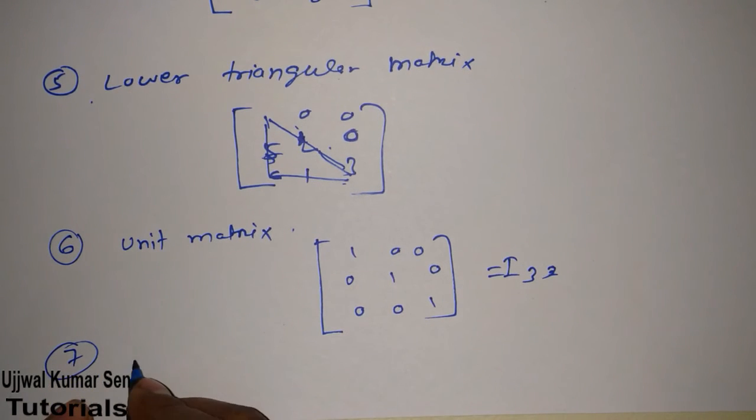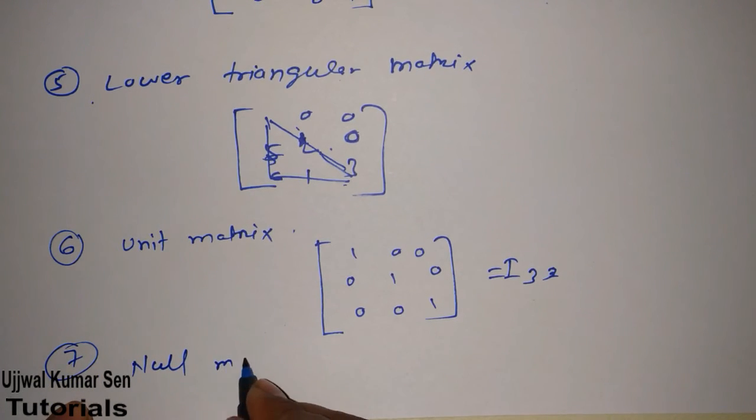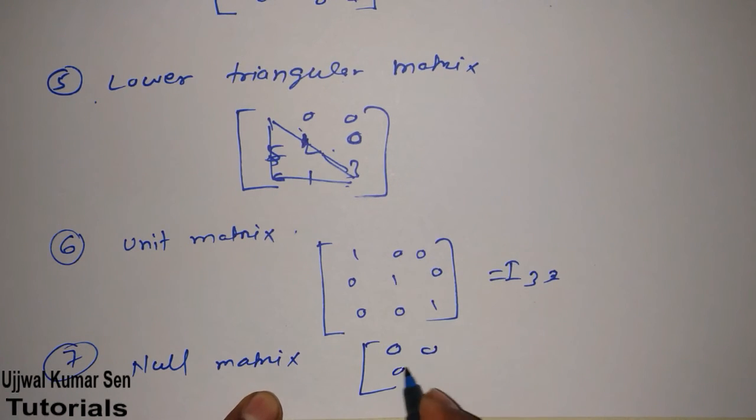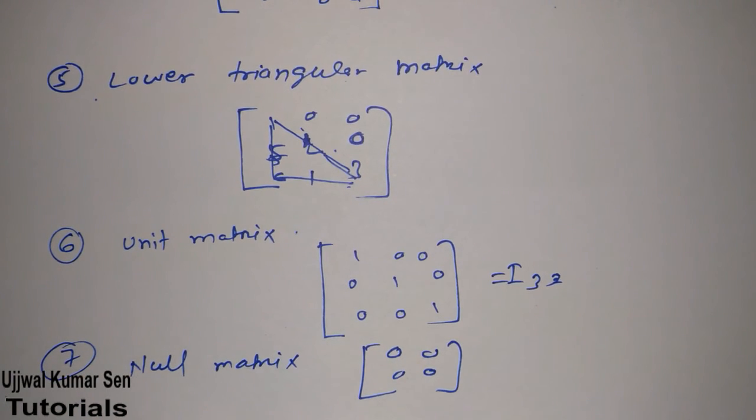Right, now we have studied around six matrices. Now let's move to the next, seventh one that is known as null matrix. Null matrix having zero values in all the elements of a matrix in which all the elements are of zero values. That is known as null matrix.